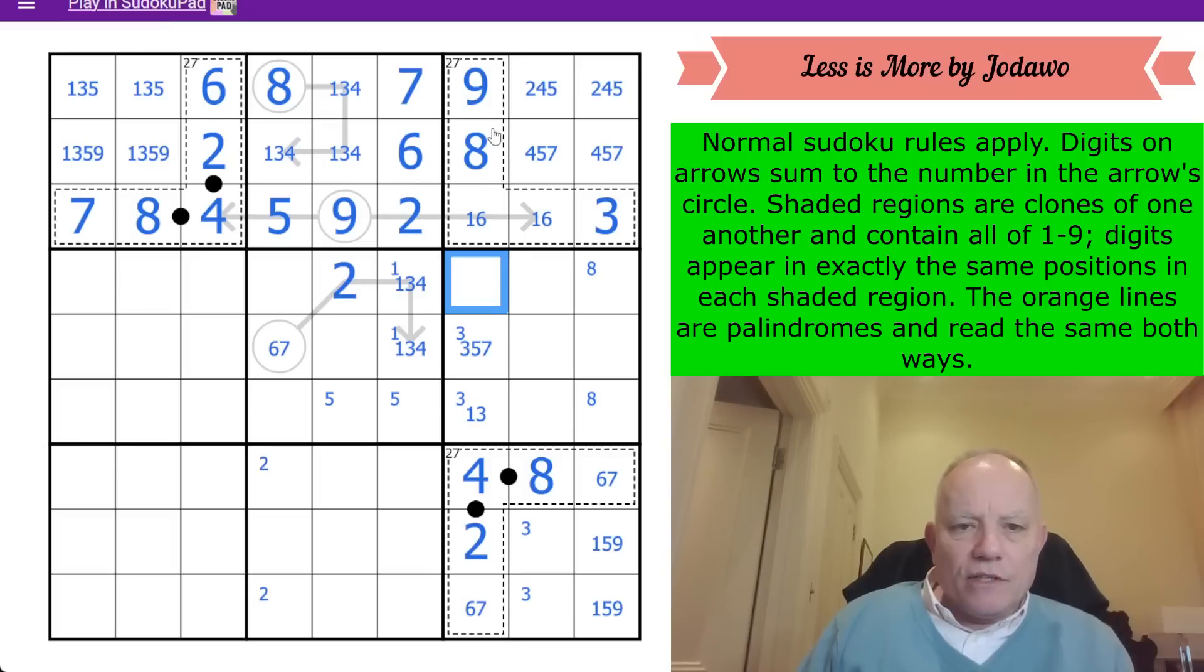This one can't be 9, 8, 3, 6, 2 or 4. So that's 1, 5 or 7. How did I know that couldn't be 6 because of that pair? Come on, let's just keep going here.